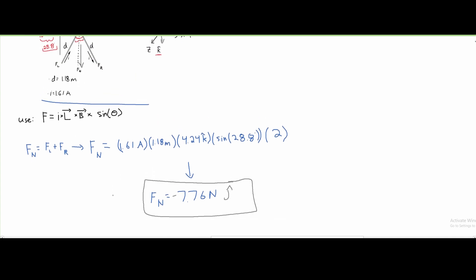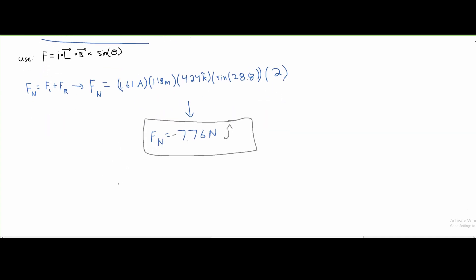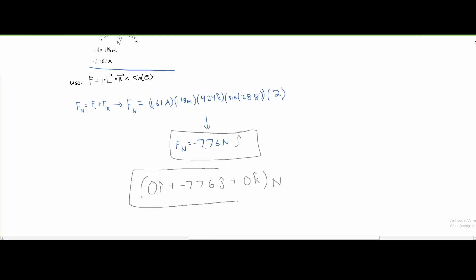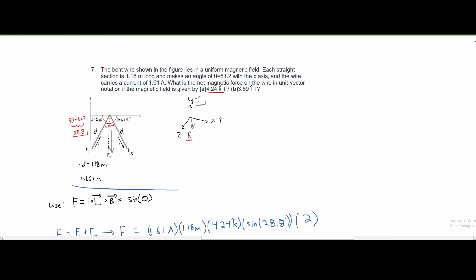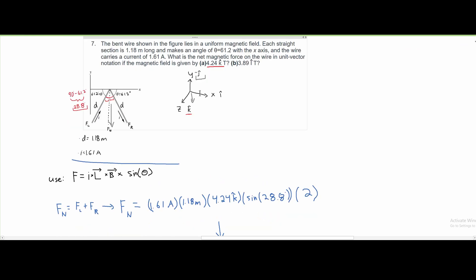We don't have any x value. In unit vector notation, we have 0i minus 7.76j plus 0k newtons. This is the correct answer since we're asked to do it in unit vector notation. For part b,